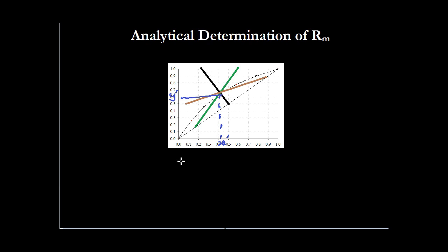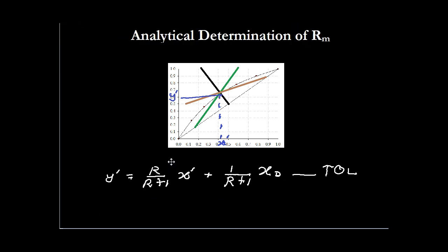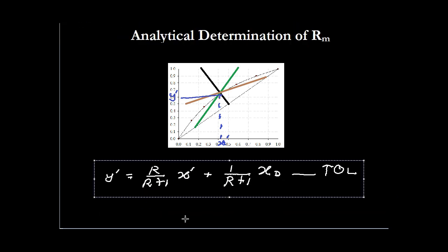We can use the x-dash and y-dash coordinates in all three equations. Using them for the top operating line, we get: y' = (r / (r+1)) · x' + (1 / (r+1)) · xd, where xd is the concentration of the top product.